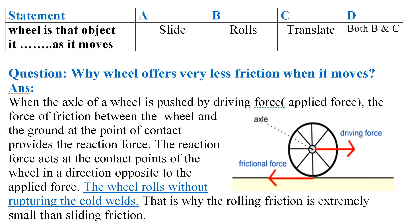Students, we are already done with the topic of friction and different definitions associated with it. Today we will move to the next topic related to friction in our daily life. Before starting the topic, we will solve an MCQ. The MCQ statement says that a wheel is that object which dash as it moves. Four options are given.